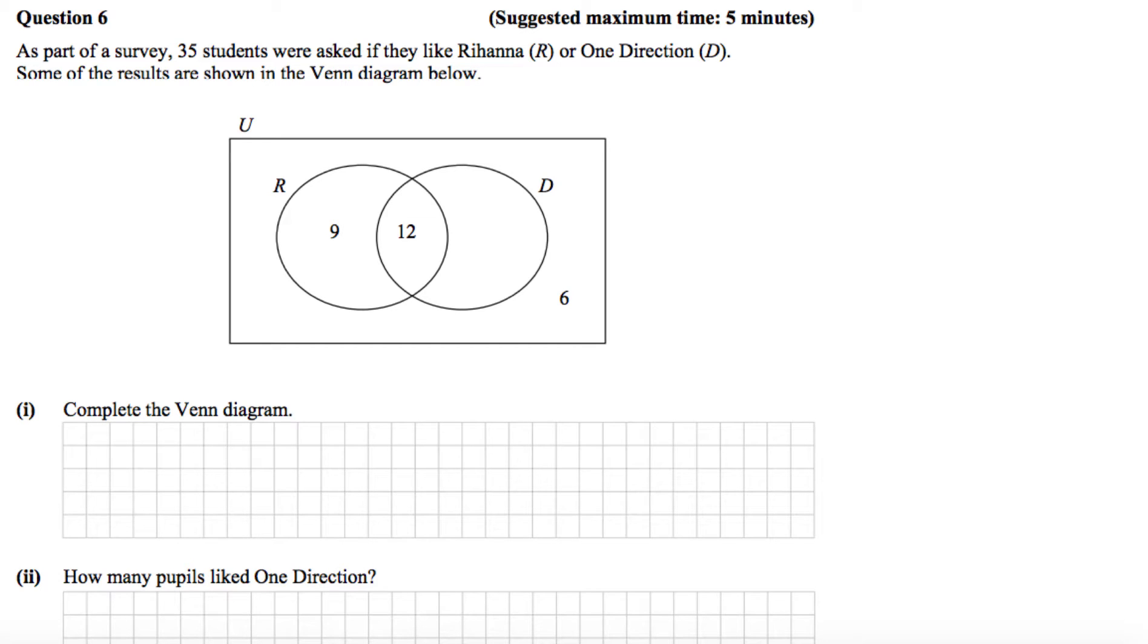So this is the 2014 Junior Certificate Ordinary Level Paper 1 and we're looking at question number 6. As part of a survey, 35 students were asked if they like Rihanna or One Direction. Some of the results are shown in the Venn diagram below.